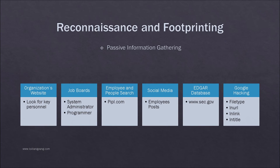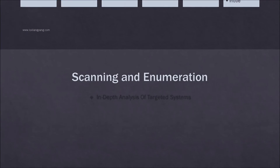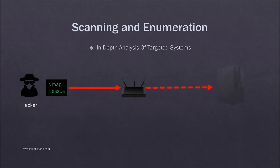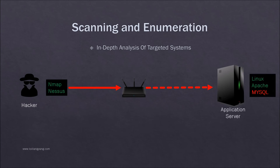Scanning and enumeration is an active form of information gathering to understand the landscape of the organization. In this example, a hacker is scanning for running services in the system and found a vulnerable MySQL service in the application server. Active information gathering can potentially alert administrators because of its intrusive behavior.